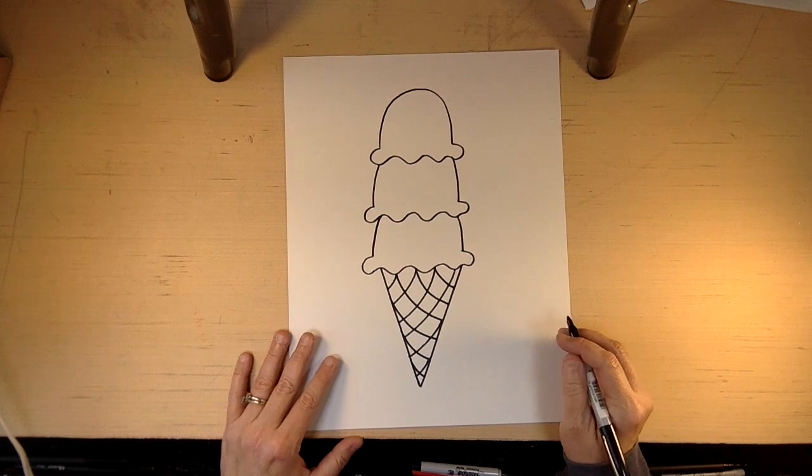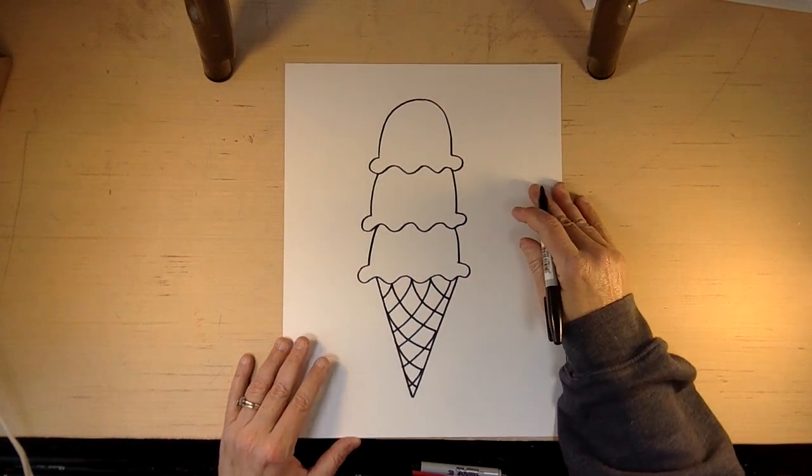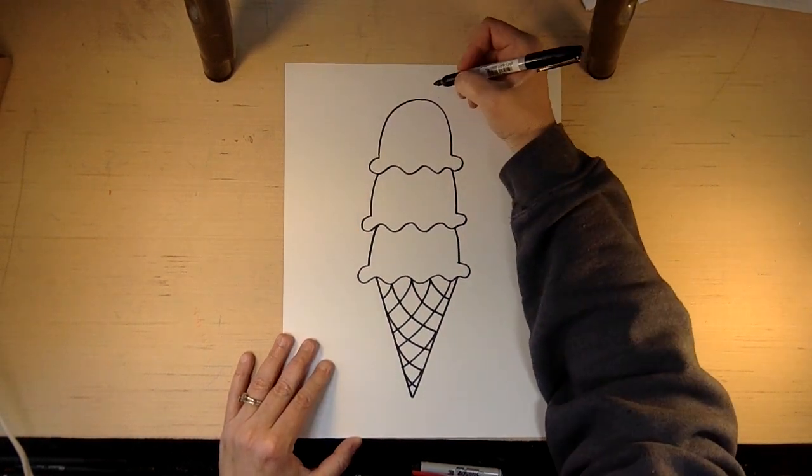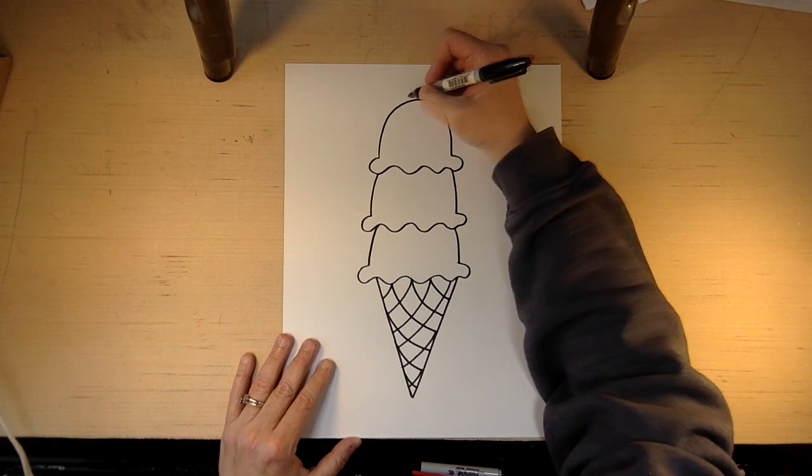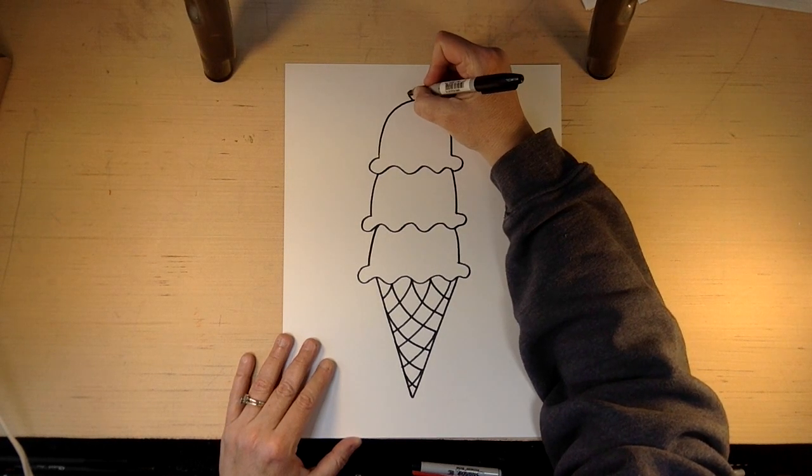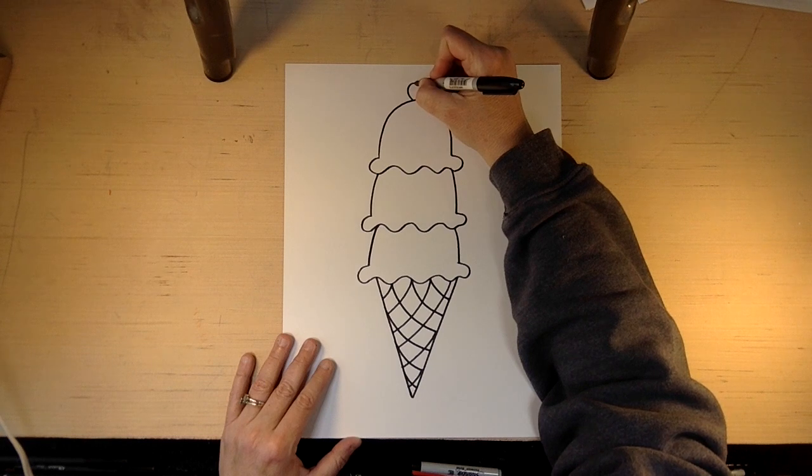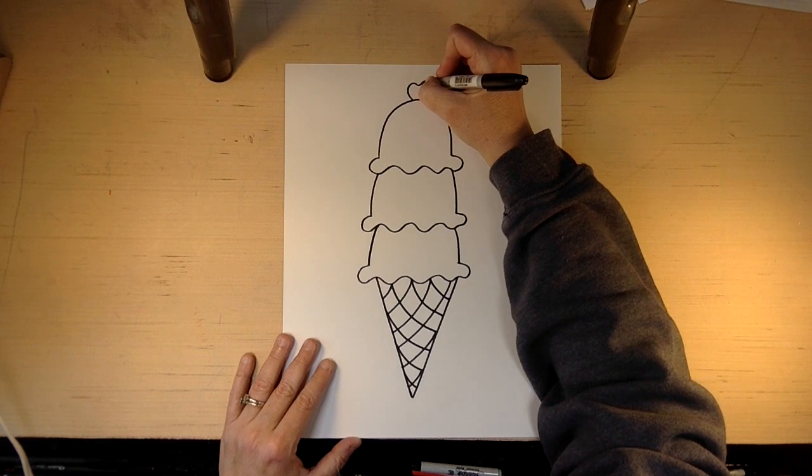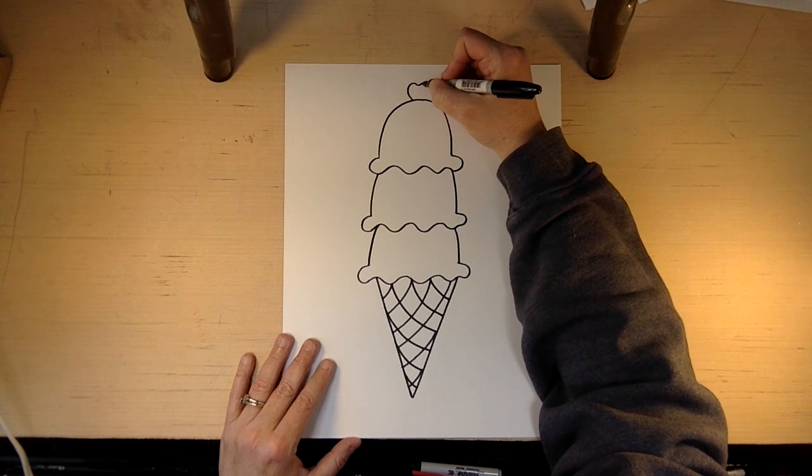Now if you want to, oh, first we're going to do our cherry on top. I don't know if I've ever had a cone with a cherry on top, but I think it looks kind of fun. So we want to draw. It's kind of like a circle, but on the top it has a little dip.